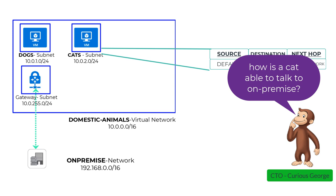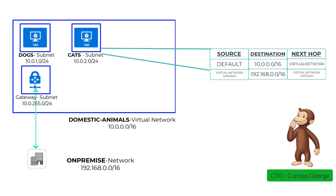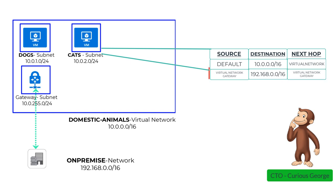The next question Curious George had was how is the VM communicating back to on-prem? If we go back and look at the effective routes, we would see entries where the destination is the address range of the on-premise network, 192.168.0.0/16, and the next hop is a virtual network gateway. The source is also virtual network gateway because the virtual network gateway is what created this route for us. This is also automatically created when we create the connection — we didn't have to create it manually.